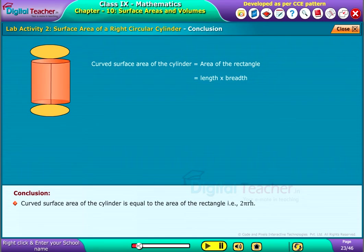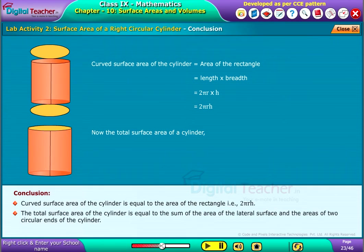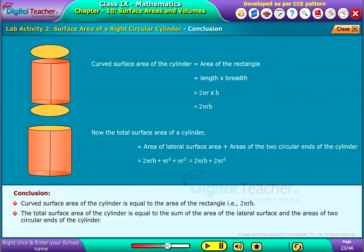Curved surface area of the cylinder is equal to the area of the rectangle, that is, 2πrh. The total surface area of the cylinder is equal to the sum of the area of the lateral surface and the areas of two circular ends of the cylinder.